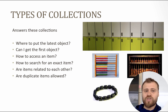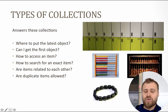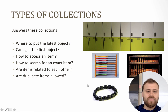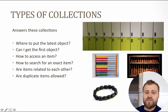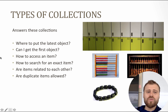So before deciding how to group objects inside a collection, you need to answer these questions: Where to put the latest object? Can I get the first object? How to access an item — randomly, iterating one by one, or just dropping your hands into a bucket and searching for an item? Are items related to each other — if I say get the next item, can I access it? And are duplicate items allowed? In some cases duplicate items should be prevented. These are all the questions we should answer before selecting a collection.